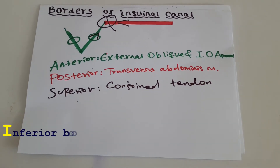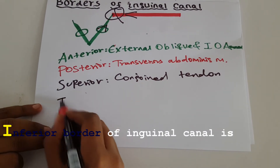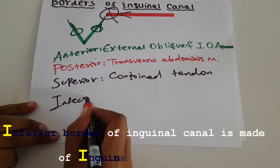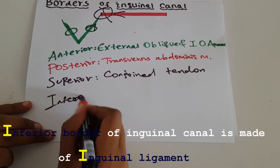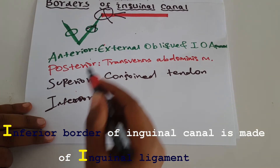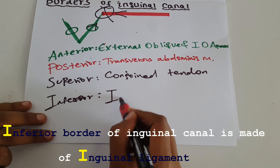And obviously the inferior border of the inguinal canal is made of the inguinal ligaments.